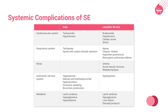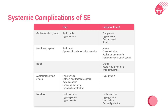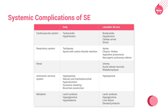Systemic complications of SE involve multiple systems. Early cardiovascular complications include tachycardia and hypertension; late complications include bradycardia, hypotension, cardiac arrest, and shock. Early respiratory complications include tachypnea and apnea with carbon dioxide retention; late changes include apnea, Cheyne-Stokes breathing, aspiration pneumonia, and neurogenic pulmonary edema.